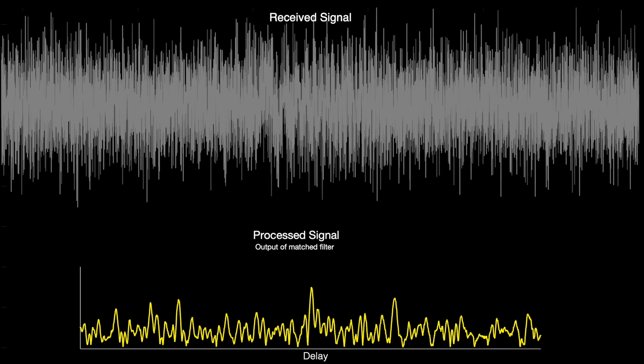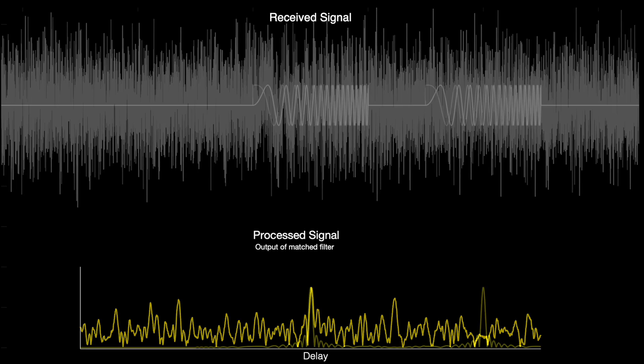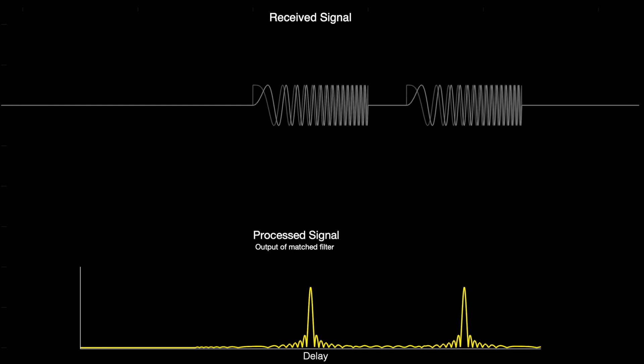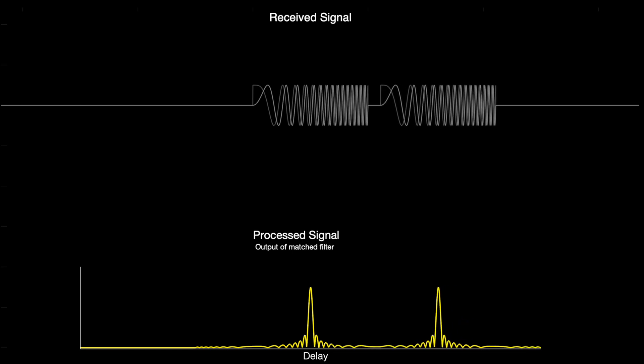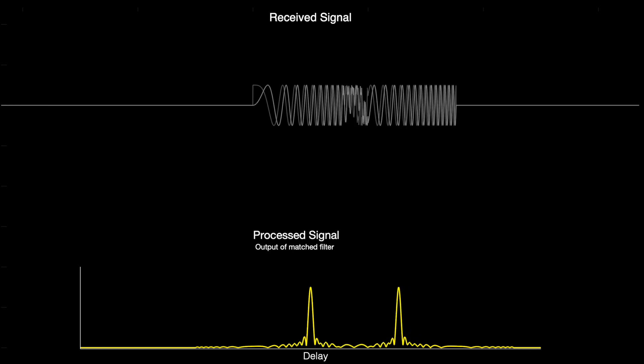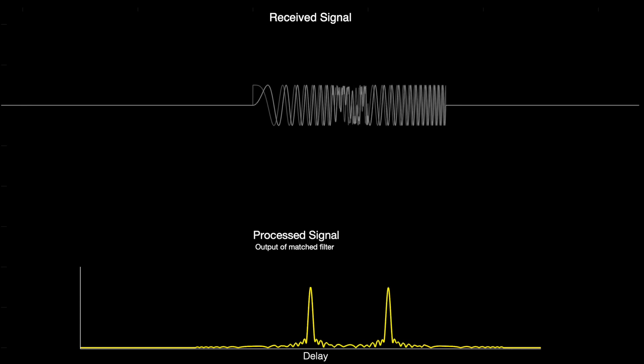But in addition to that, we also get the benefit of higher resolution. Watch what happens as these two objects get closer to each other. Even as the two pulses start to overlap with each other, the process signal still has two defined peaks. In fact, the resolution that we get from an LFM waveform isn't a function of pulse width, but it's a function of how much frequency you sweep through throughout the pulse.